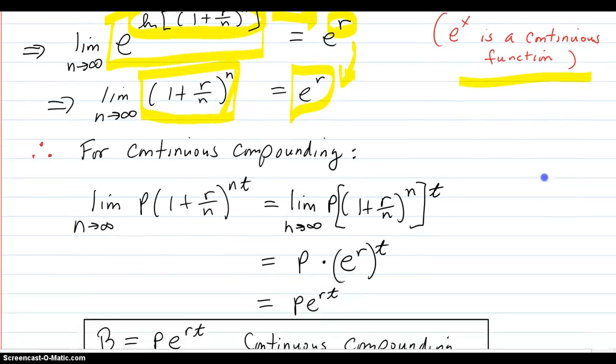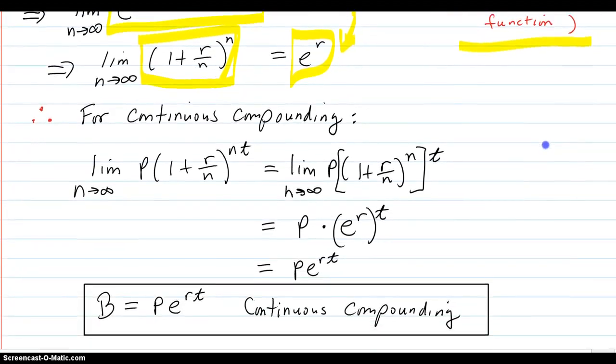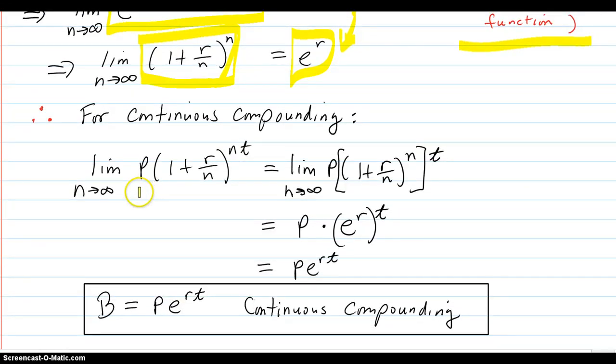Okay, so for continuous compounding, you have this original formula here. This limit goes to this limit. Because all we're doing is using some algebra right here, just separating out this T. Because when you raise something to the exponent, you multiply the exponent. So, that's equal.